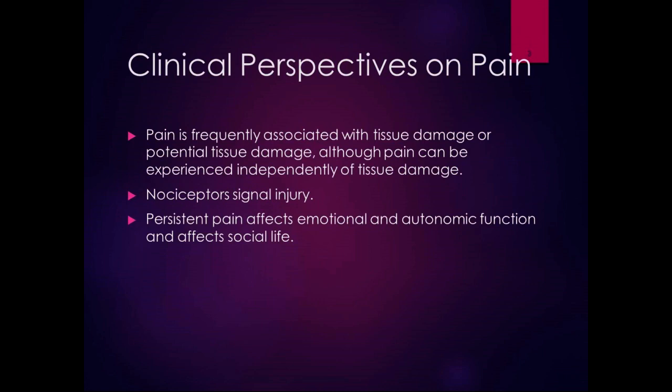Pain is frequently associated with tissue damage or potential tissue damage — that's an important distinction. But pain can also be experienced independently of tissue damage. Have you ever watched somebody get a splinter in their finger and you actually feel it in yours? Nociceptors signal injury, but they can also signal potential injury. If the nerves are sensitized, they can send a signal saying there might be tissue damage. Persistent pain can affect emotional and autonomic function, and social life as well. Chronic pain is a huge issue in the clinic.